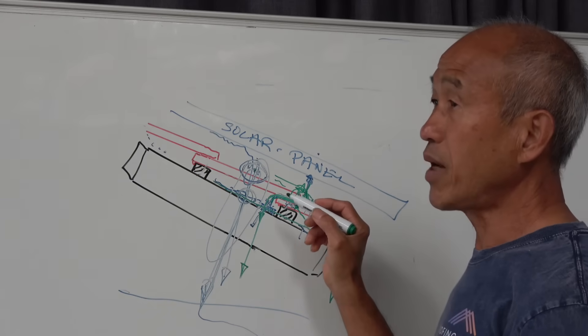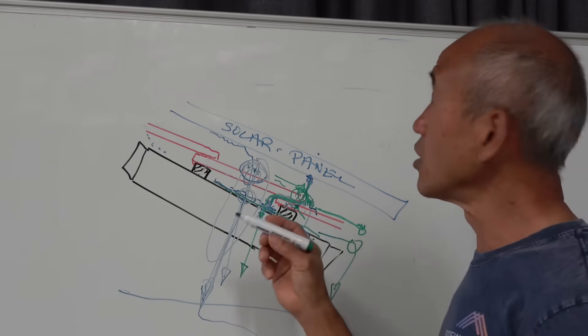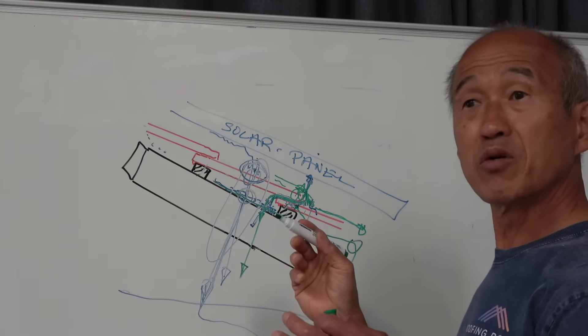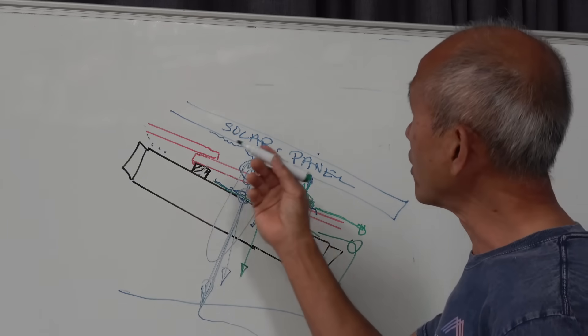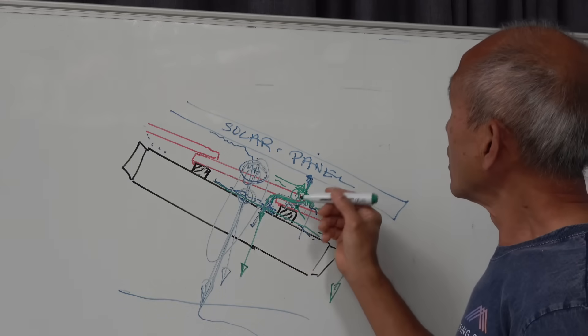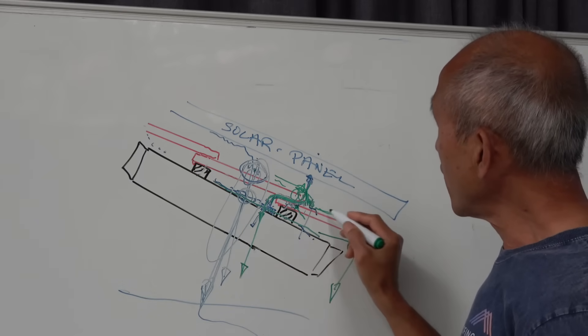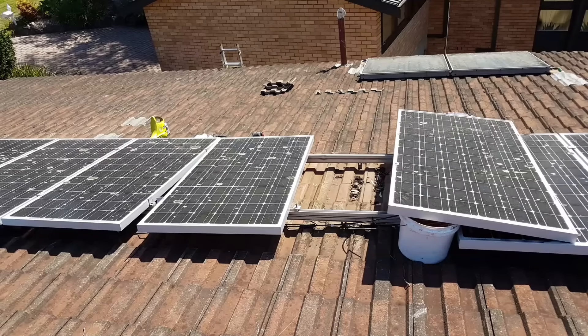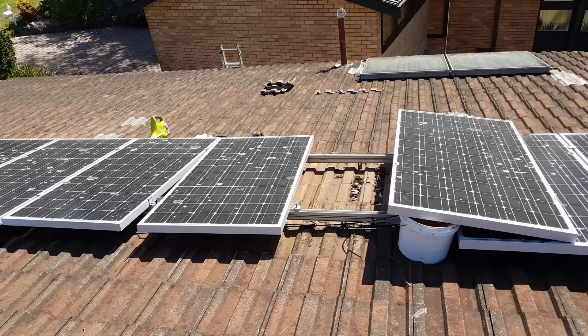Now this problem is compounded by a couple of things. One, the slope of the roof. As we get tile roofs that are pushing the limit on the pitch and we get lower pitch roofs, it means that water cannot drain away quickly enough and that problem is compounded by roof pitch.